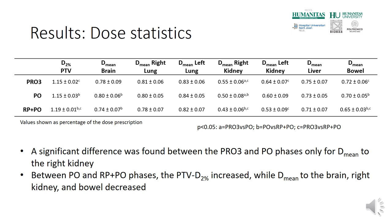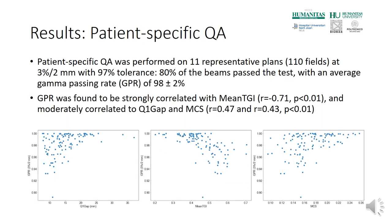In this table are reported the dose statistics for the PTV and the organs at risk, with values shown as percentage of the dose prescription. We found a significant difference between the PRO3 and PO phases only for the mean dose to the right kidney. Whereas between the PO and RP plus PO phases, we found that the D2% to the PTV increased, while the mean dose to the brain, right kidney, and bowel significantly decreased.